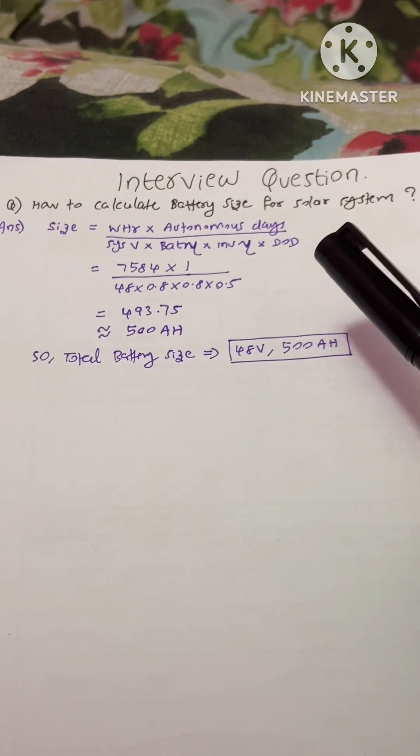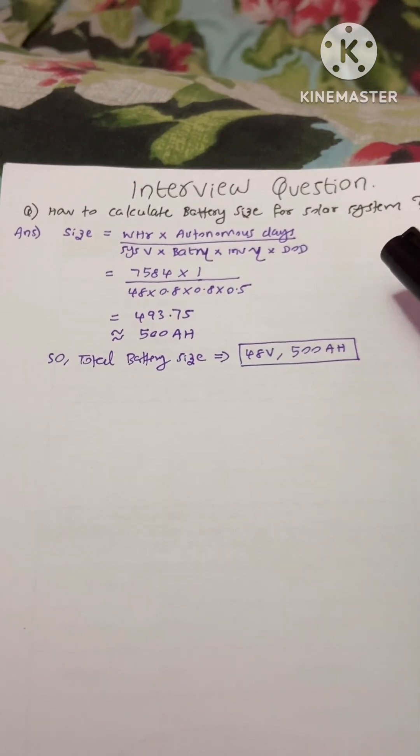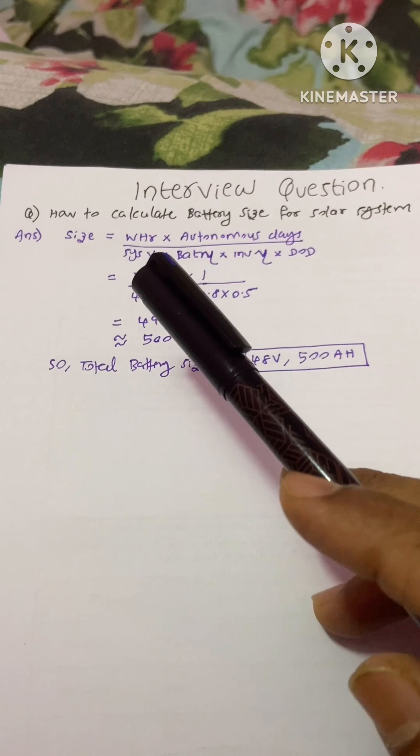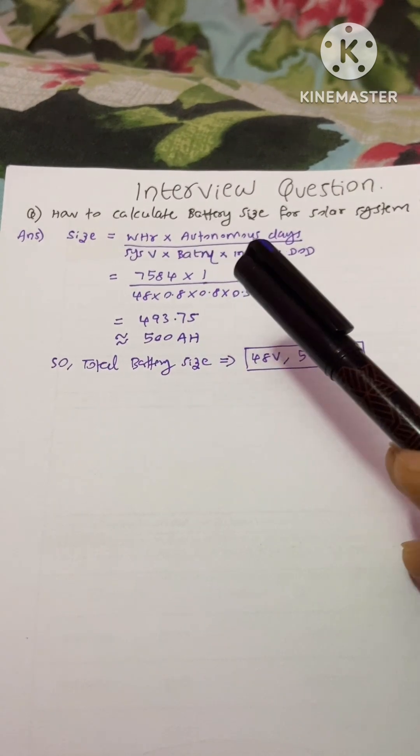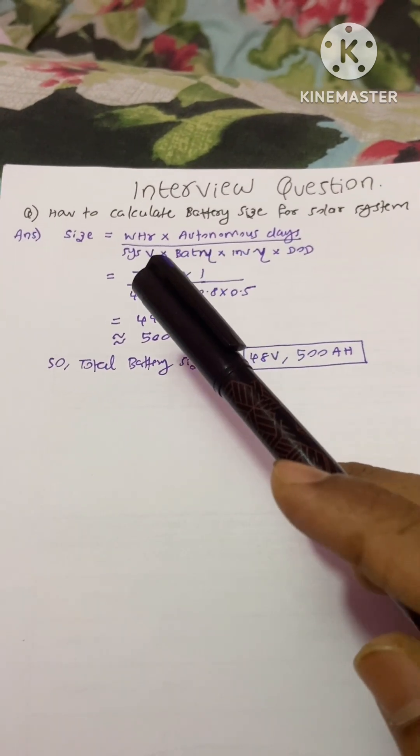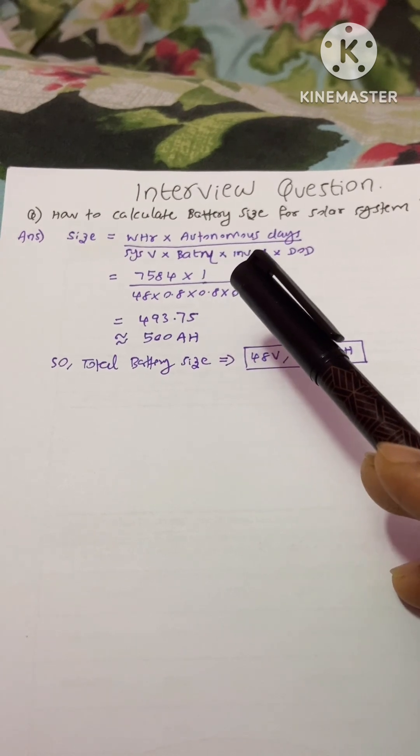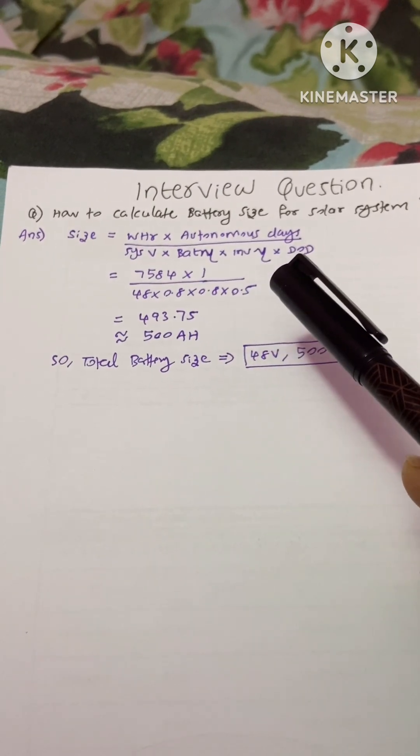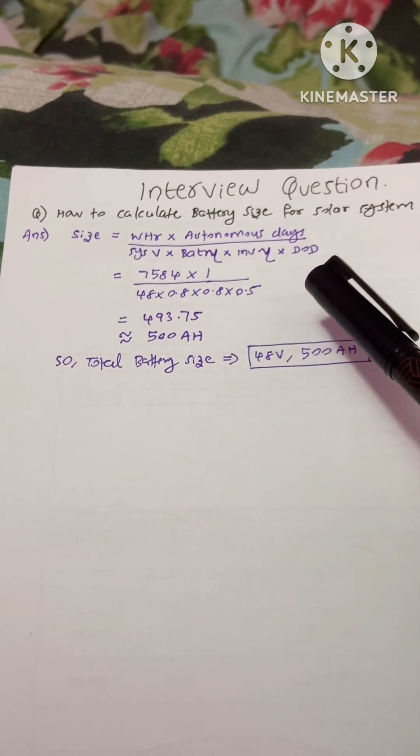How to calculate battery size for your solar system? The equation is watt hour times autonomous days, divided by system voltage times battery efficiency times inverter efficiency times DOD depth of discharge.